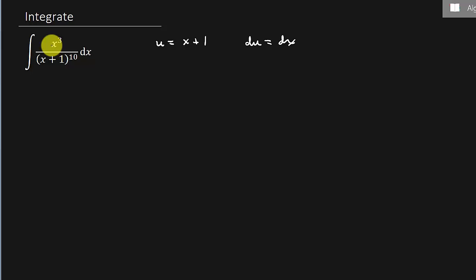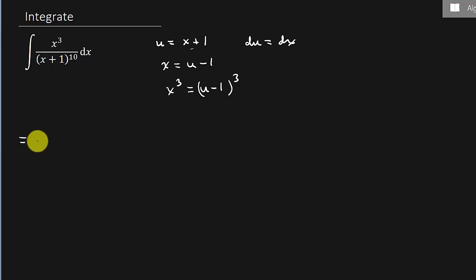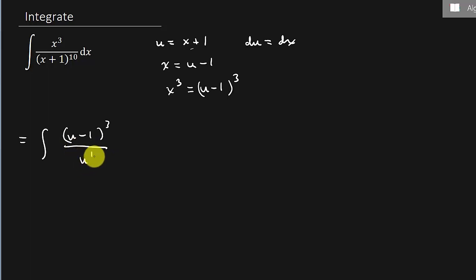Let's see what we can do here. I've got x cubed, and I don't know what x is, but I could take u equals x plus 1 and solve for x, so that gives me x equals u minus 1. But x is still cubed, so x cubed is equal to u minus 1 cubed. Now I can replace everything: x cubed becomes u minus 1 cubed, over u to the 10th, and dx becomes du.